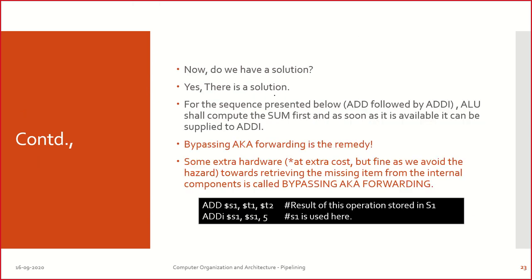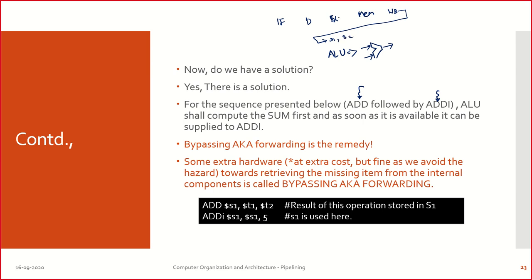When there is a problem, there is always a solution. The ALU will compute the result for the add instruction. The result is available at the third stage — execute. The pipeline stages are: first, instruction fetch (IF); second, decode (ID); third, execute (EX); fourth, memory (MEM); fifth, write back (WB). Normally we take the result from write back and write it into a register, but we have the result available right after execute — so why wait?